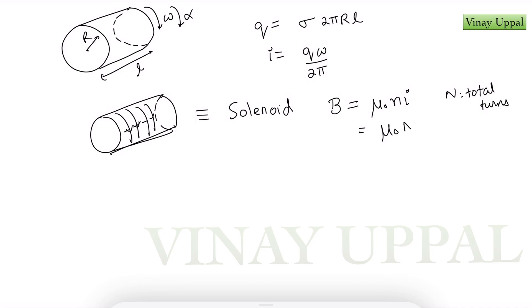So a long solenoid has a magnetic field of μ₀ n i. Again, a very standard formula that you should know from a basic study of magnetism. Here what is n? n is the number of turns per unit length. So if I say n is the total number of turns in the solenoid, I can write small n, number of turns per unit length, as the total number of turns divided by the length of the solenoid. If you look at the numerator here, n into i, what is that? That is simply the summation of the current in each turn of the solenoid. Each turn is carrying current i.